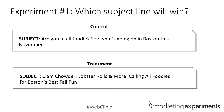So we put together the treatment: 'Clam chowder, lobster rolls, and more — calling all foodies for Boston's best fall fun.' We showed both subject lines side by side and asked the audience to vote. The majority voted for the treatment. We asked why — responses noted it felt more specific, more appetizing. Both are viable options, so let's look at the results. The treatment won — we saw a 10% increase in opens.